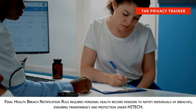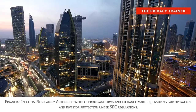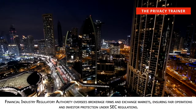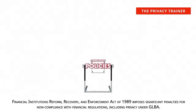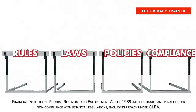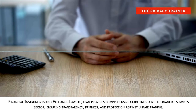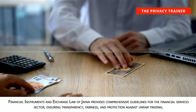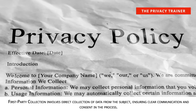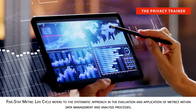Final Health Breach Notification Rule. Requires personal health record vendors to notify individuals of breaches, ensuring transparency and protection under HITECH. Financial Industry Regulatory Authority. Oversees brokerage firms and exchange markets, ensuring fair operations and investor protection under SEC regulations. Financial Institutions Reform, Recovery and Enforcement Act of 1989. Imposes significant penalties for non-compliance with financial regulations, including privacy under GLBA. Financial Instruments and Exchange Law of Japan. Provides comprehensive guidelines for the financial services sector, ensuring transparency, fairness, and protection against unfair trading. First-party collection. Involves direct collection of data from the subject, ensuring clear communication and consent in the process.